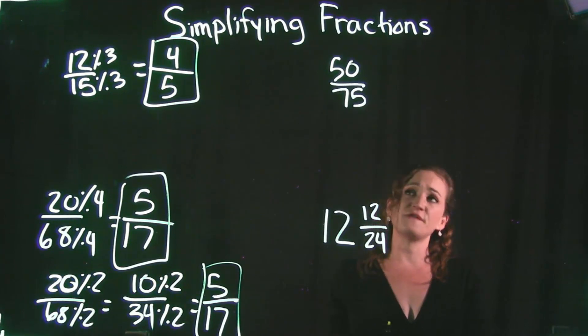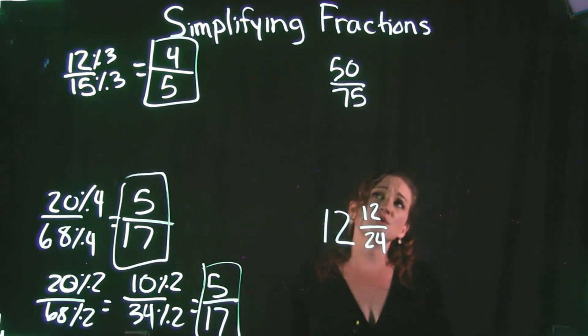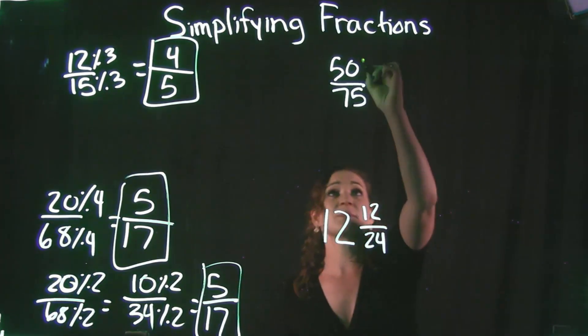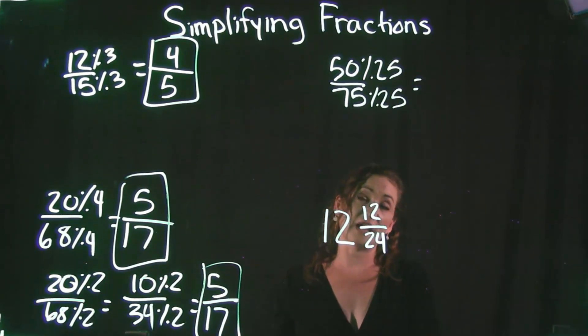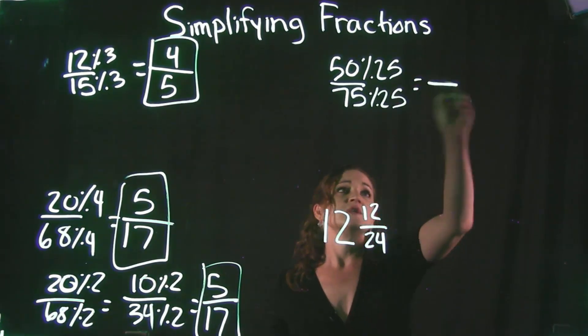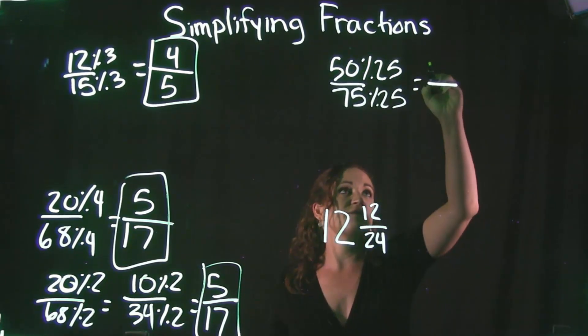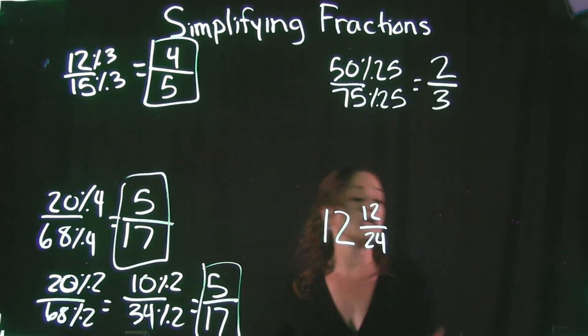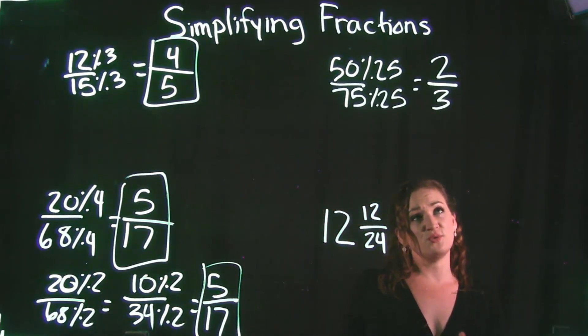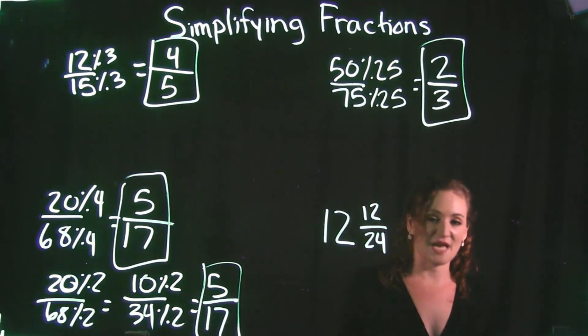Moving on to the next example, looking at 50 over 75. A 5 can definitely go into 50. It can also go into 75. A 25 actually goes into both. So I'm going to go ahead and use that since that's a fairly big number there. I'm going to divide a 25 out from each one of these. So my new numerator, 50 divided by 25 would be a 2. And 75 divided by 25 would be a 3. So my simplified answer would be 2 thirds. And there's nothing in common with the 2 thirds other than a 1. So I am done there.